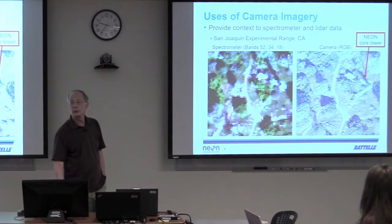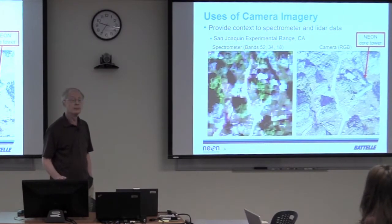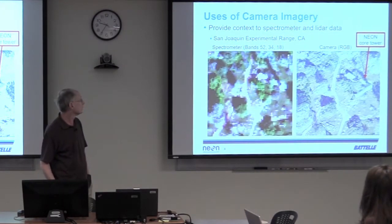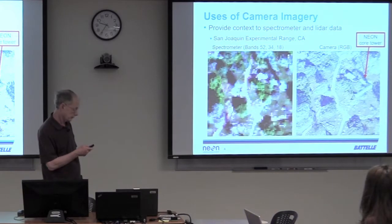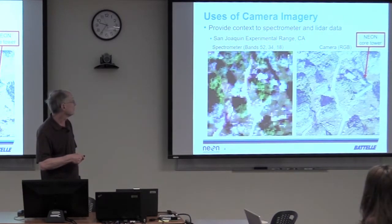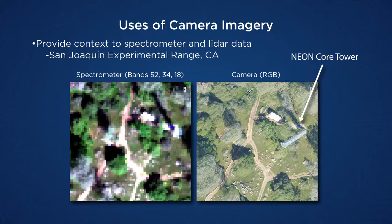So what do you use the camera imagers for? It's a complement to the spectral data. On the left here you see spectrometer data — we selected three bands, 52, 34, and 18, and they mimic RGB.